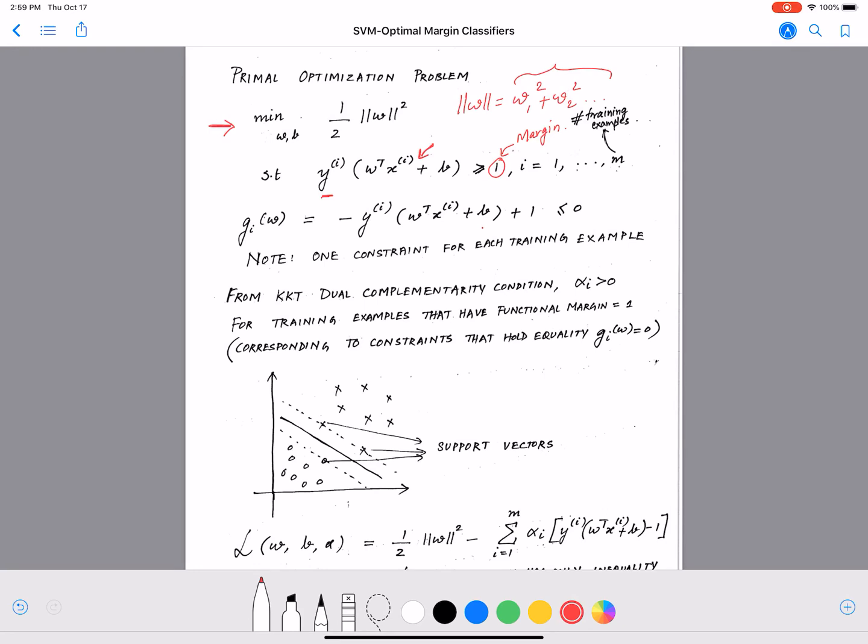For all training examples, this is a condition that has to hold for all training examples. So what does this condition mean? This condition means that all points in our data space are either on the margin or away from the margin.